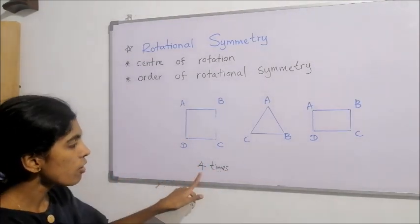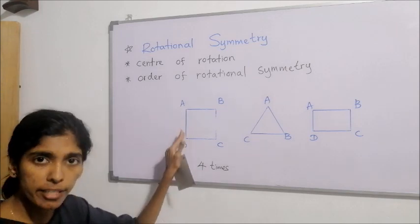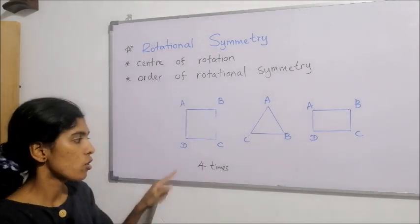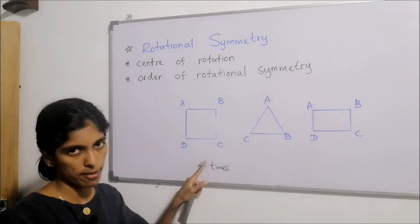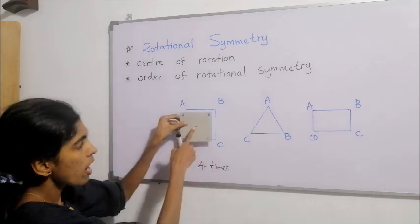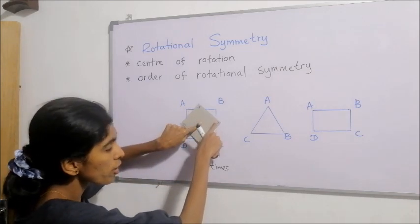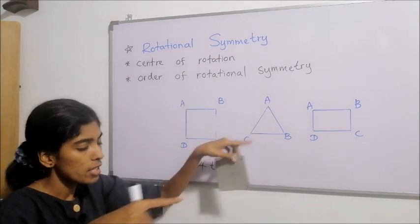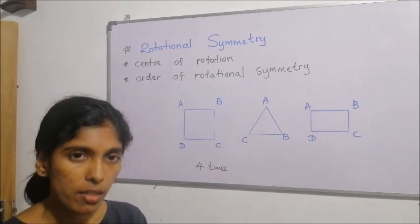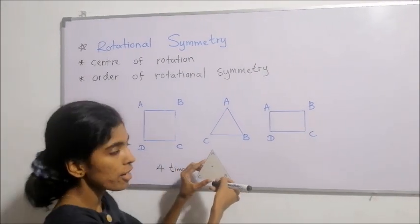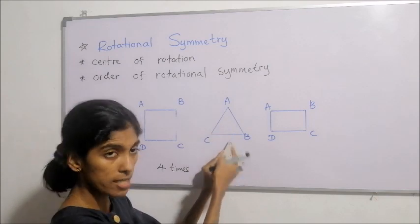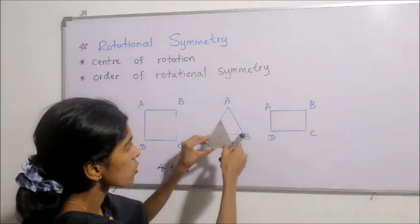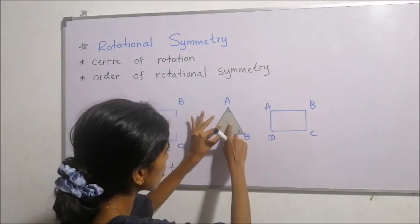The number of times a figure coincides with the original figure during a complete rotation is called the order of rotational symmetry. So the order of rotational symmetry for the square is 4. The fixed point about which the figure is rotated is called the center of rotation. For the next example, I have cut a triangular lamina and labeled it A, B, C, and marked the fixed point.